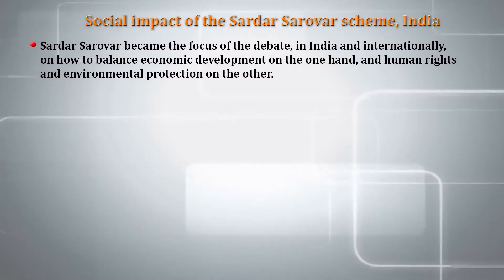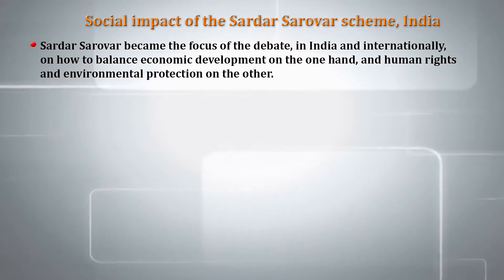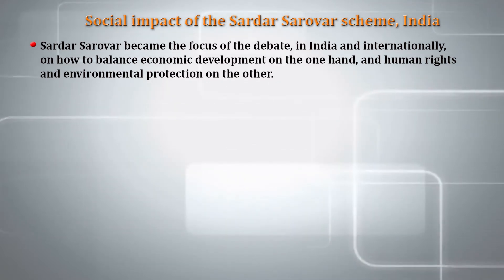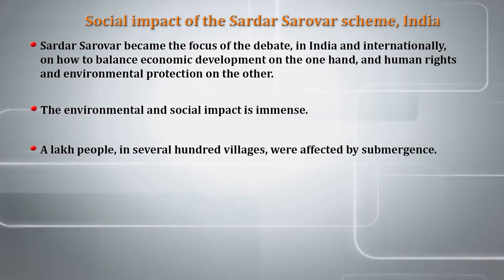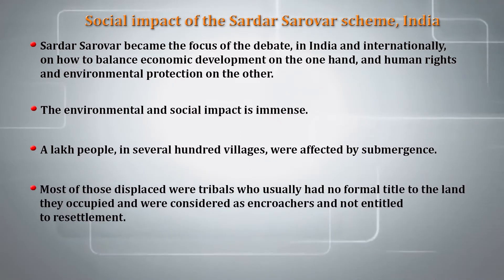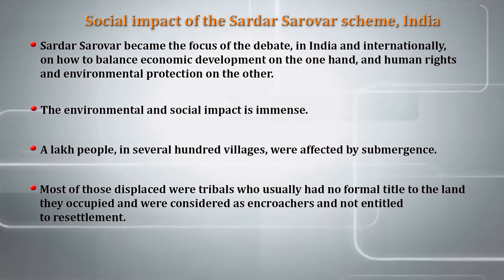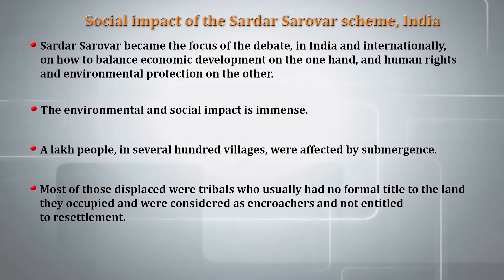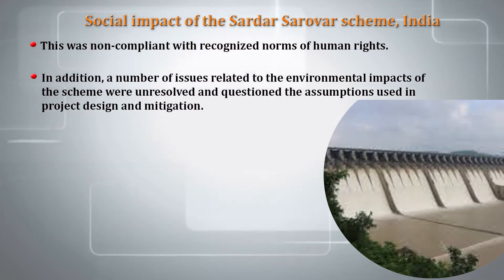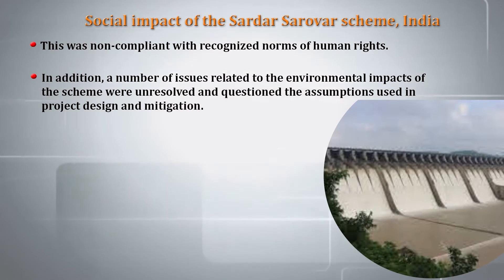Let us first discuss a case study on the social impact of the Sardar Sarovar scheme in India. The Sardar Sarovar scheme became the focus of debate in India and internationally on how to balance economic development on one hand and human rights and environmental protection on the other. The environmental and social impact is immense. Almost a lakh people and several hundred villages were affected by the submergence. Most of the displaced people, from more than hundreds of villages, were tribals who had no formal title to the land they occupied and were considered as encroachers, not entitled to any resettlement. This was non-compliant with recognized norms of human rights, and a number of issues related to the environmental impacts of the scheme were unresolved and questioned, including the assumptions used in the project design and mitigation.